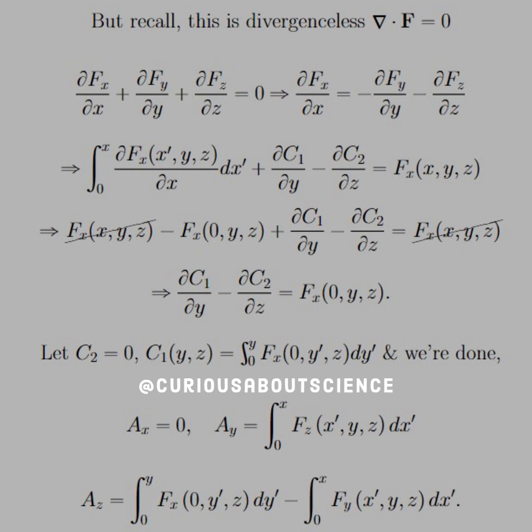So since these are constants, let's just let C2 equals zero. Then C1 is the integral from zero to y of Fx(0,y',z) dy'. And we're done. We show that if Ax equals zero, Ay equals this integral and Az equals this integral. That is fascinating.